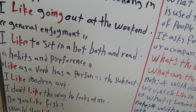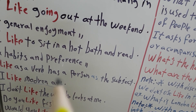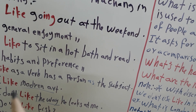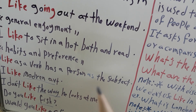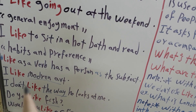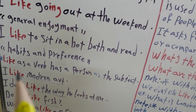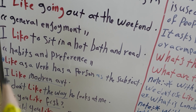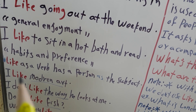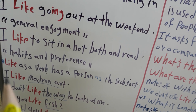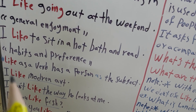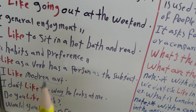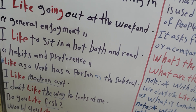Now I will use 'like' as a verb that has a person as the subject. For example, 'I like modern art.' I use 'like' as a verb with a person as the subject. Here, 'I' is a person as the subject.